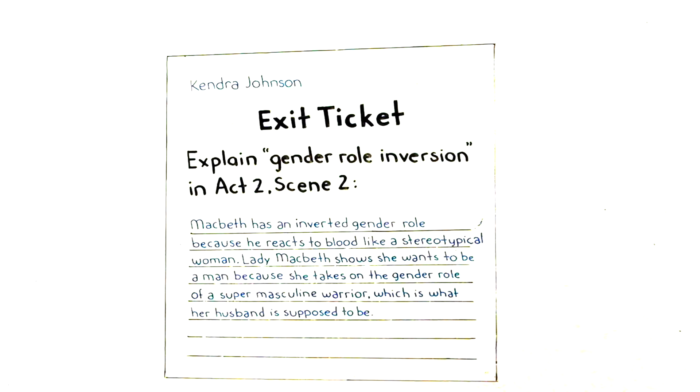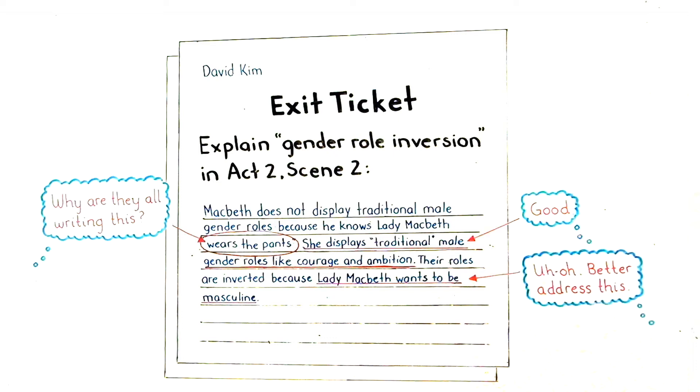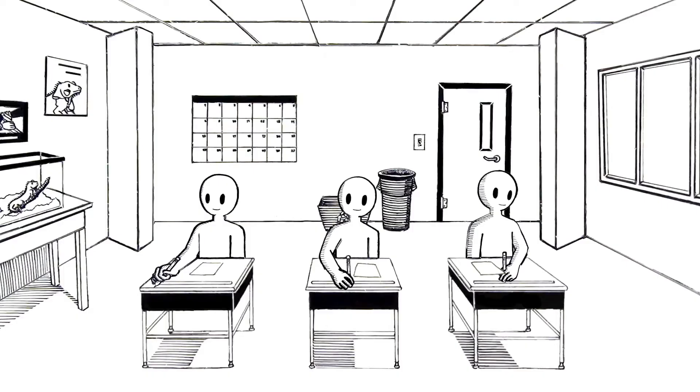This is a preview of what the exit ticket data is likely to tell you and could even help you adjust your instruction for your students next period. When the bell rings, students can simply put the exit ticket in a tray on their way out.